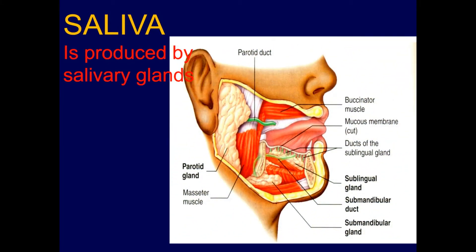There are three pairs of major salivary glands. Number one: the parotid glands. The parotid glands are the largest salivary glands, each weighing about 20 to 30 grams. They are located near the angles of the jaw. The parotid glands are a purely serous variety of glands.